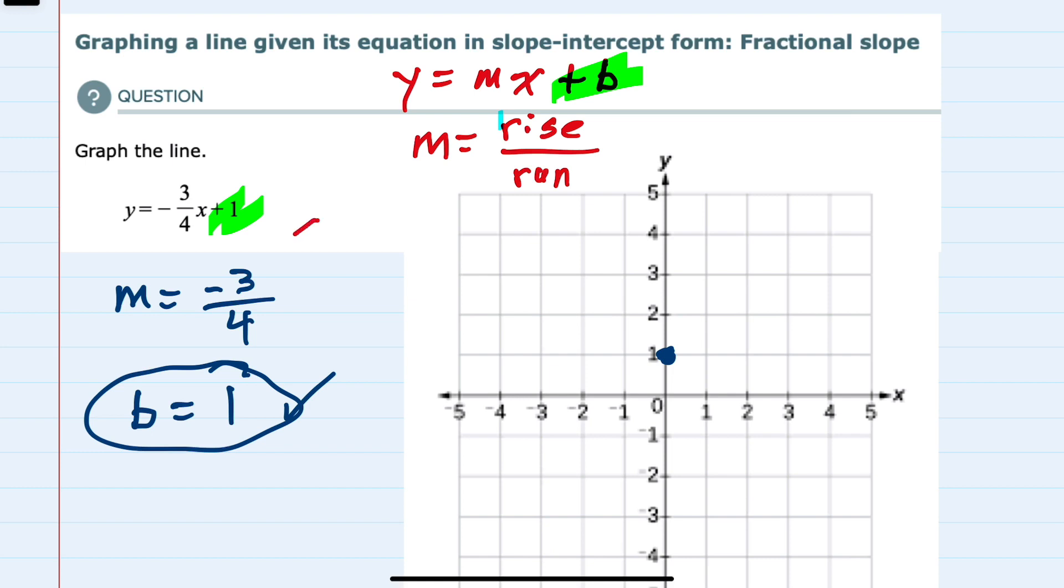And then the slope has a rise of negative three and a run of four. So from this point, one, we would go down three and over four. Down because it was negative, to the right because the four was positive.